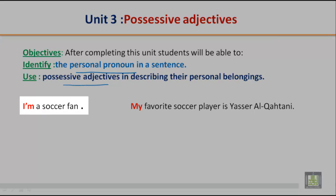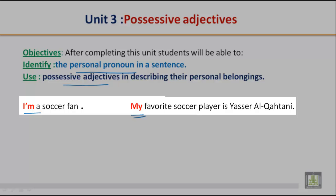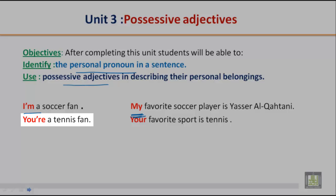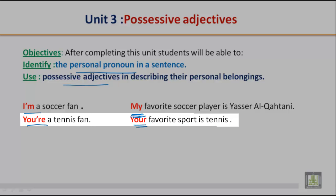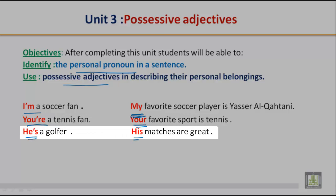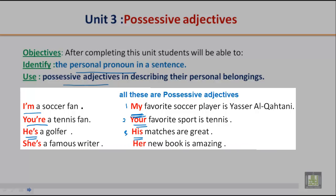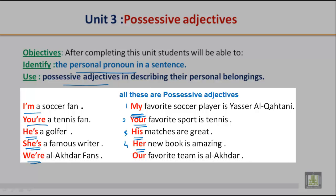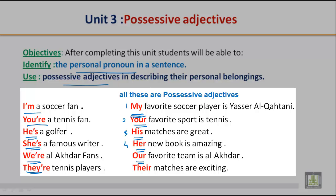Let us look at the first example: 'I am a soccer fan. My favorite soccer player is Yasser Al-Qahtani.' Here 'my' is the possessive adjective. More examples: 'You are a tennis fan. Your favorite sport is tennis.' 'He is a golfer. His matches are great.' 'She is a famous writer. Her new book is amazing.' 'We are all fans. Our favorite team is Al-Akhtar.'